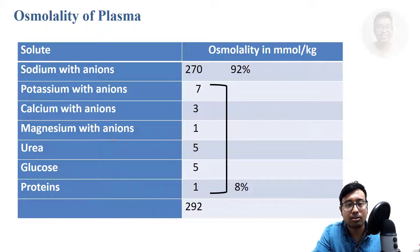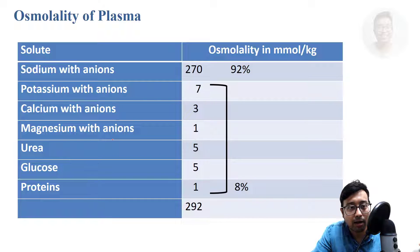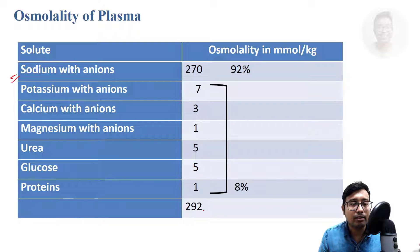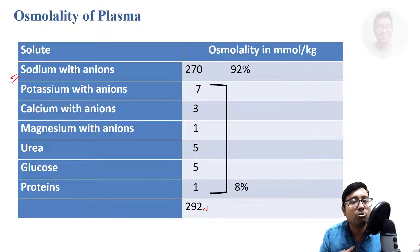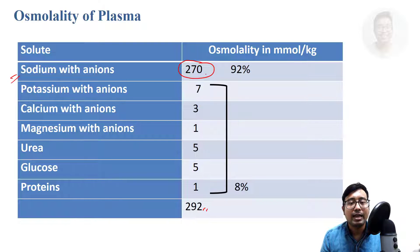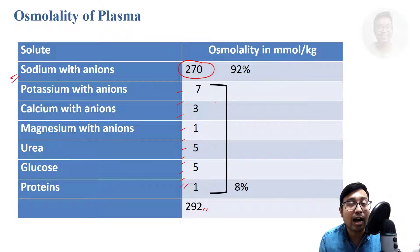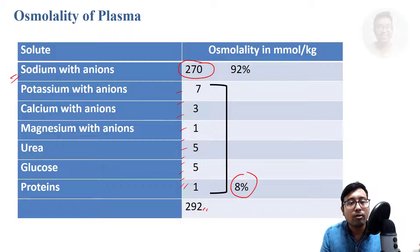We are seeing what are the major contributors — what solutes are present in plasma and how much they contribute to the total osmolality. The major contributor is clearly sodium. If osmolality is 292 milliosmol/kg, then 92% — that is 270 milliosmol/kg — is contributed by sodium alone. The remaining 8% is from other solutes like potassium, urea, and glucose.